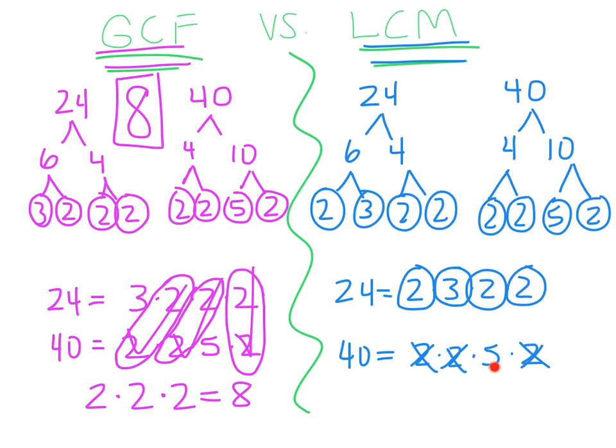Now I have a 5. How many times does 5 occur up here? None. So the bottom one we circle. Then you multiply all the ones you have circled. So it's 2 times 3 times 2 times 2 times 5.